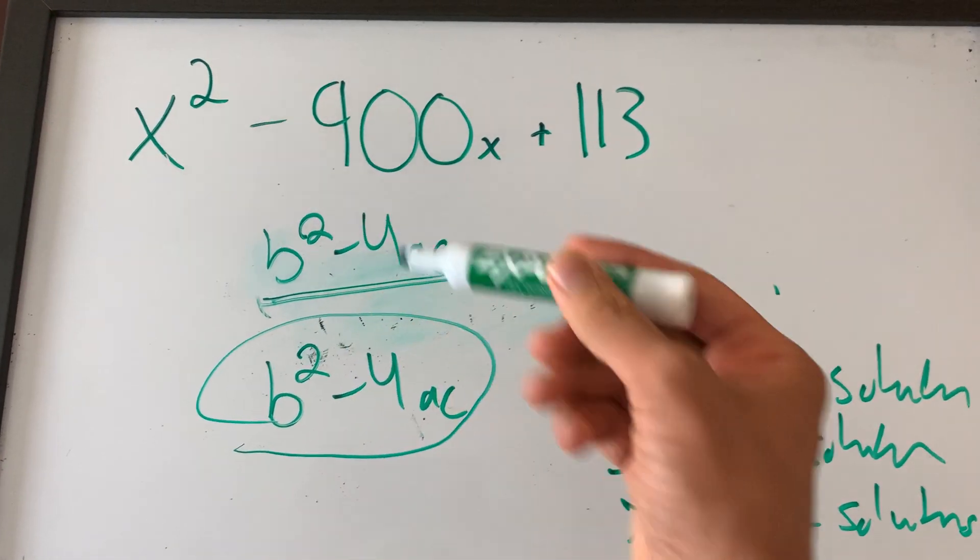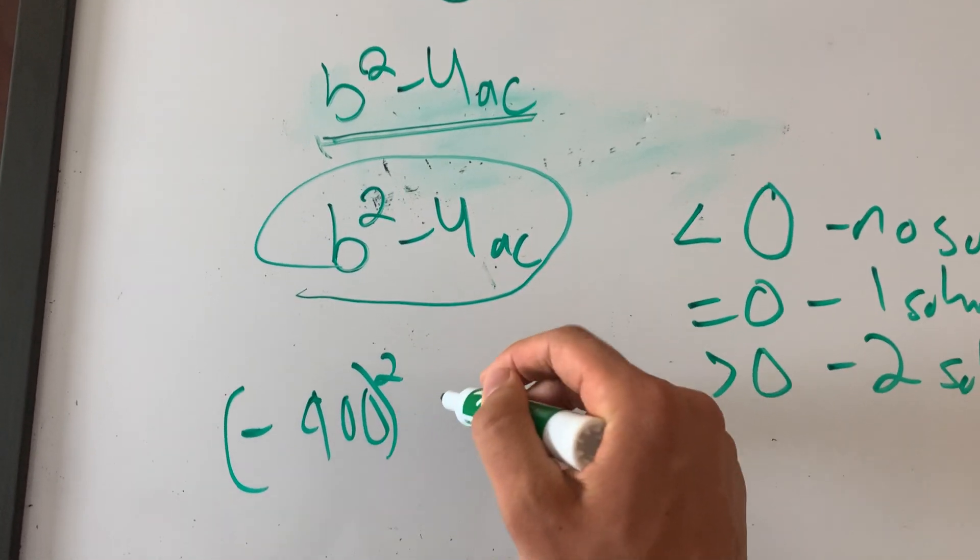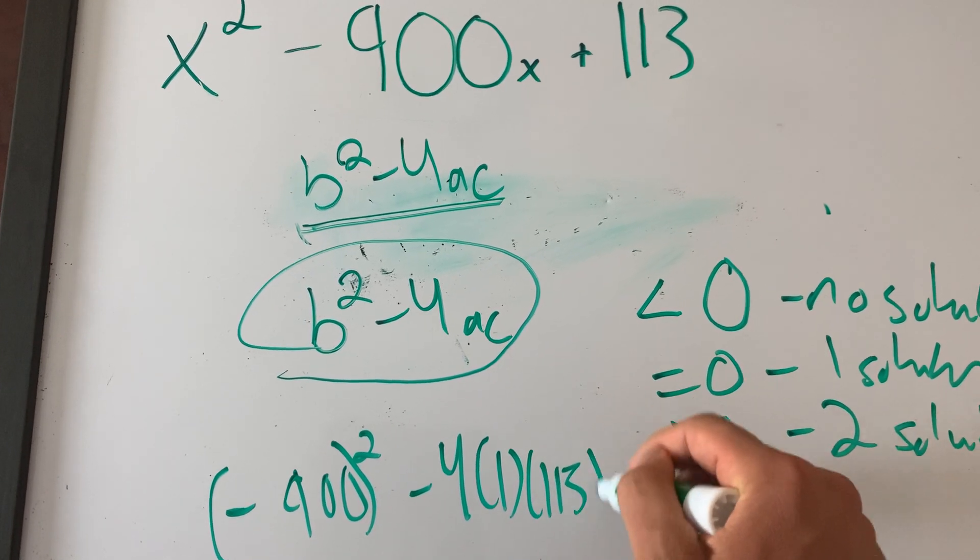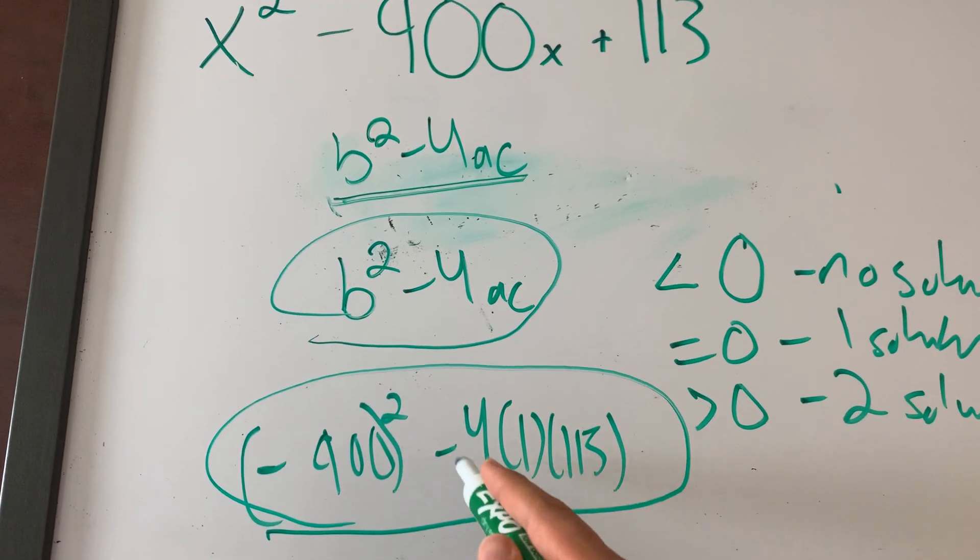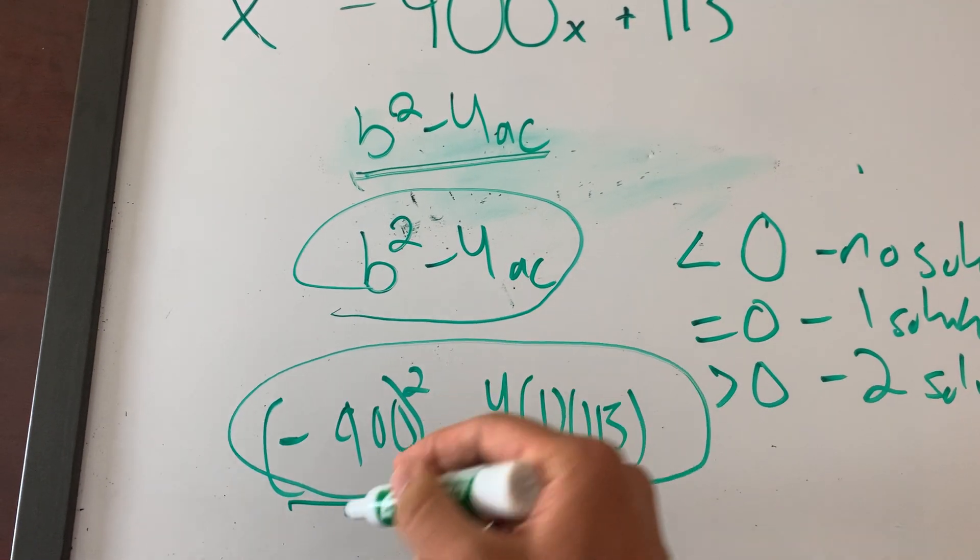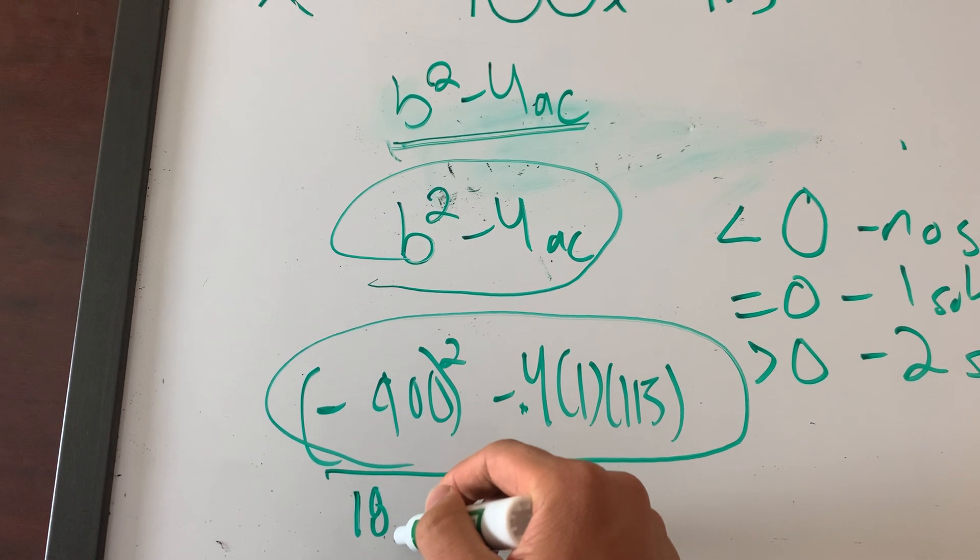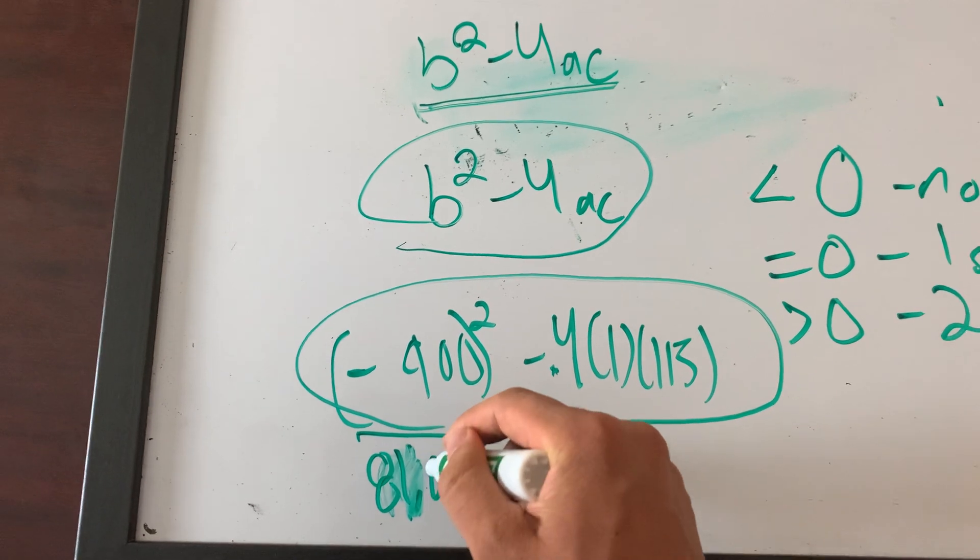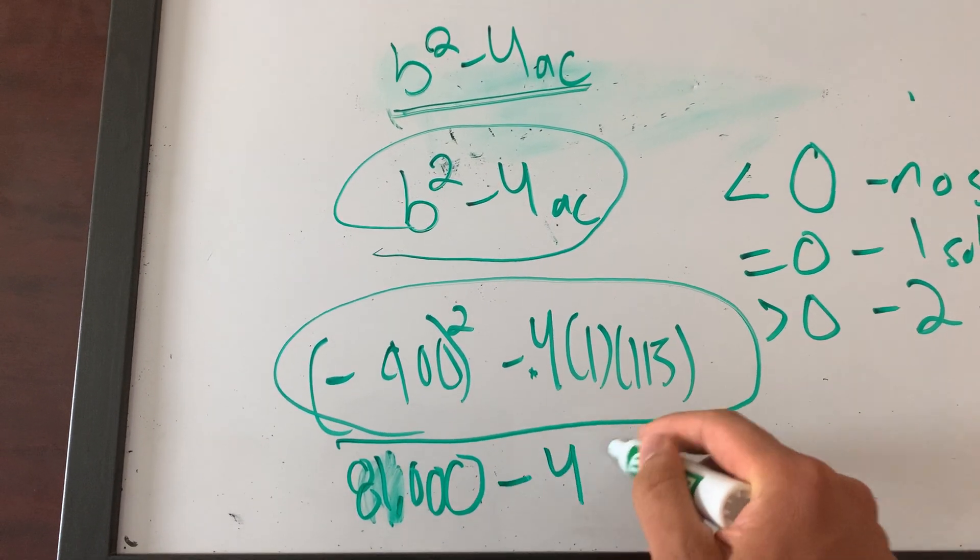Alright, so what is B squared? B squared is negative 900 squared minus 4 times 1 times 113. Okay, the thing is, you don't even have to simplify this. Already, you know this is greater than 0 because what is negative 900 squared? It is 81, my fault. 81,000